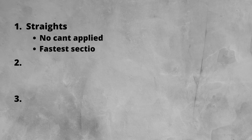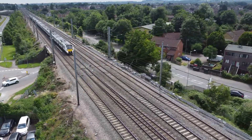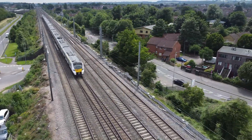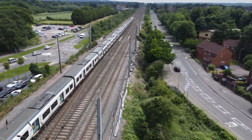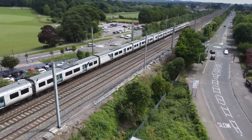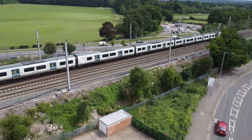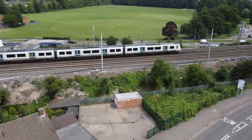First and most basic of the three, we have straights. As the name suggests, these sections of track are straight, normally with no cant applied. These sections of track are the fastest parts of the railway, similar to straight sections of road. Ideally all railway would be designed straight, but this is not practical in the real world.